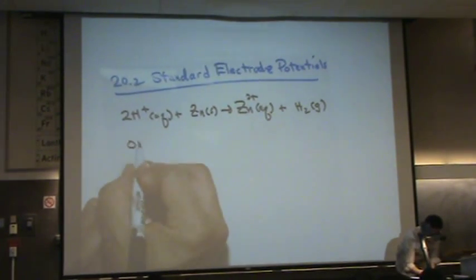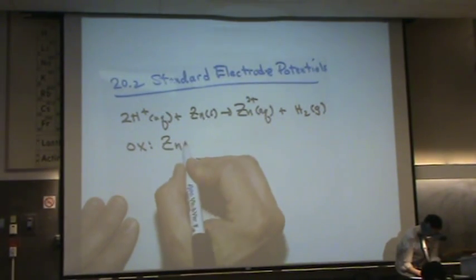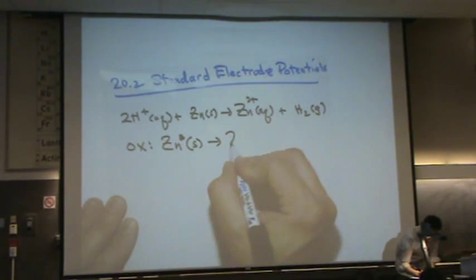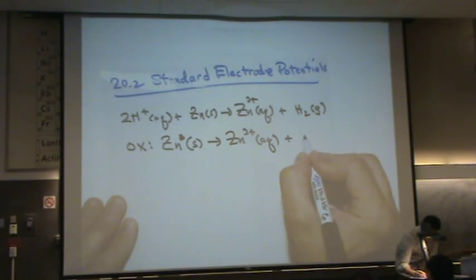So we've got an oxidation reaction. That's zinc solid goes to zinc 2+ aqueous plus 2 electrons.